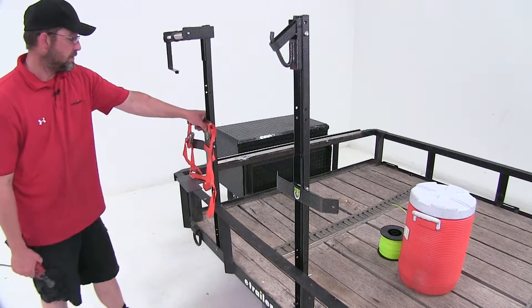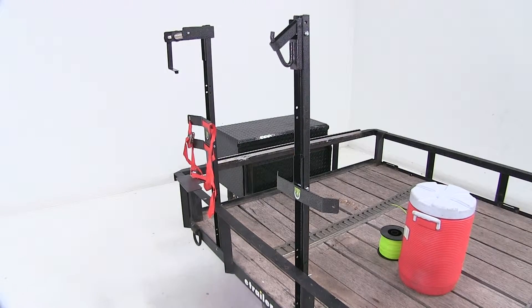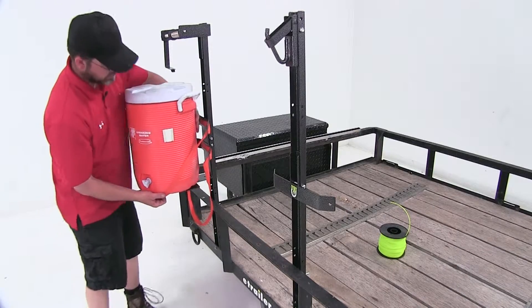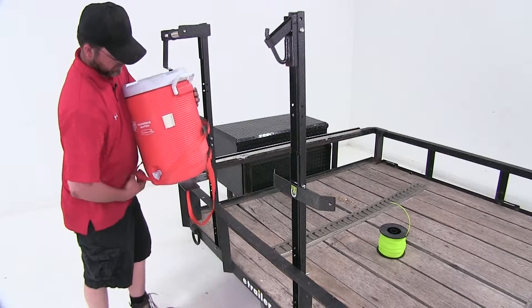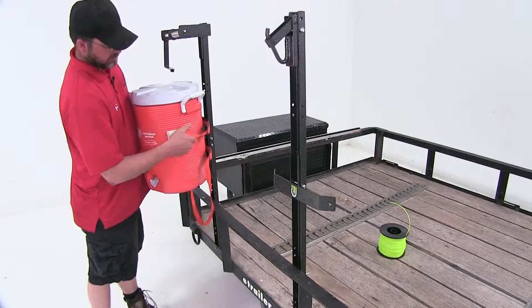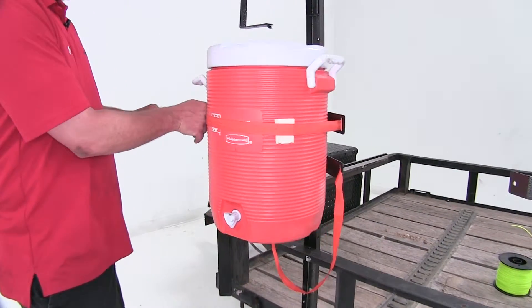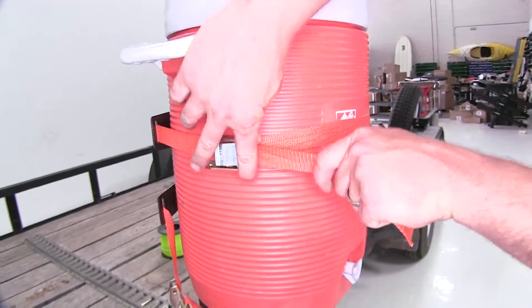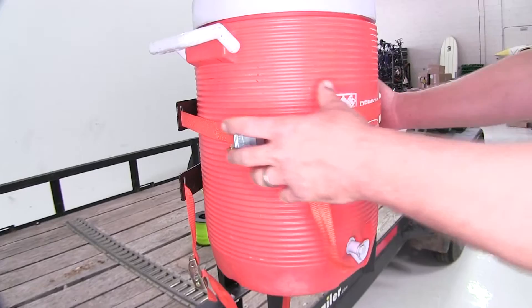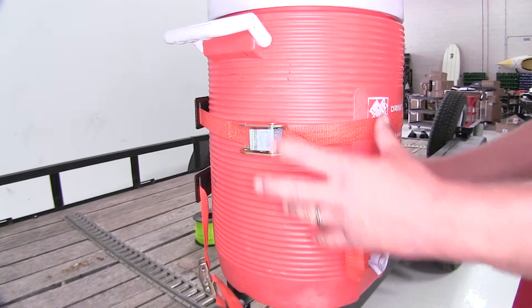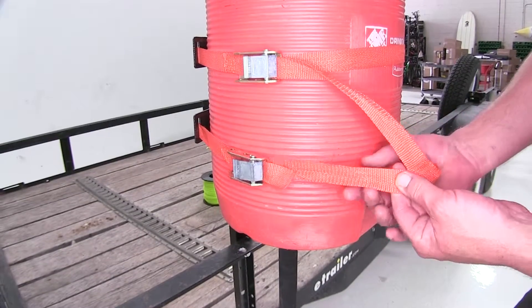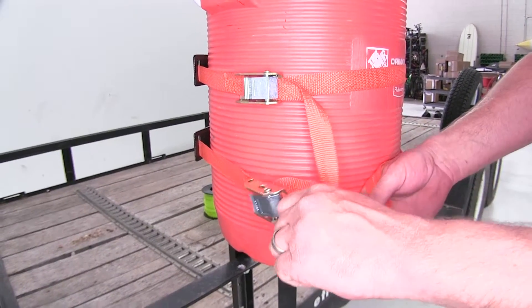And just like that, you're now ready to install your equipment. Let's go ahead and start with our cooler. We can go ahead and slide the securing straps over the outside of the cooler. And once we have it in place, take our strap and pull it tight. That'll really hold that cooler nice and tightly. We don't have to worry about it going anywhere while we travel down the road.